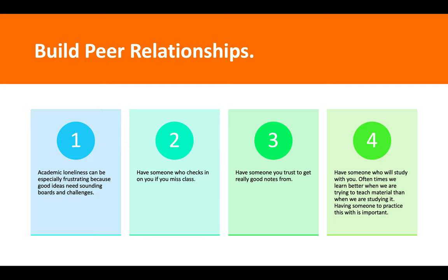Have someone who checks in on you if you miss class. Make a friend in the discussion board in an online class or in a face-to-face class, and say, 'Can you be my go-to person if I miss class?' Sharing that responsibility with somebody can help develop a good academic relationship. And then have someone who will study with you. Oftentimes we learn better when we're trying to teach materials to others, so if you have somebody that you're studying with, this is a good opportunity to practice this skill set.